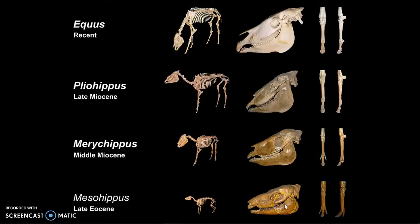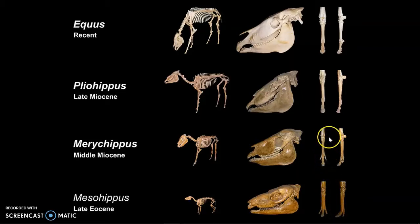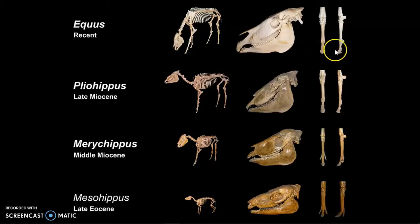You can make the same kind of argument for skull shape or even the shape of the toe. In the ancestor of the horse there were three separate toes. The two side toes became reduced over time until eventually in our modern-day horse it looks like what we would expect — a single toe with the hoof at the end.